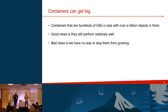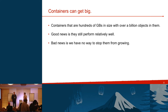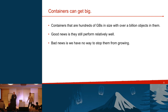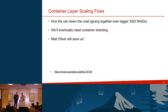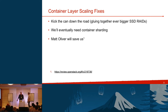Swift can scale to a billion objects per container, but we have no way of stopping these things from growing. They still perform relatively well and customers don't complain — they seem used to the eventual consistency model. We've contacted customers saying 'can you shard your containers?' and some say no. We've tried non-technical solutions like working with customers on architecture, rate limiting writes, and gluing together bigger SSD arrays. We figure eventually we'll need container sharding — there's a Racker named Matt Oliver working on that.